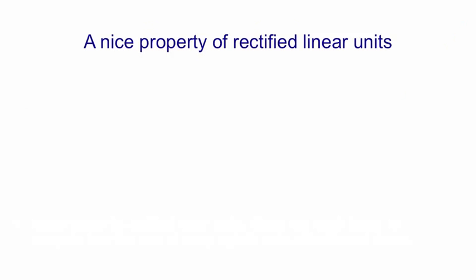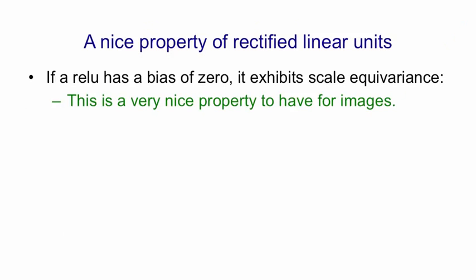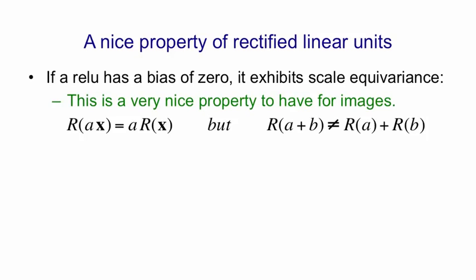One nice property of rectified linear units is that if they have a bias of zero, they exhibit scale equivariance. This is a very nice property to have for images. What scale equivariance means is that if you take an image x and multiply all the pixel intensities by a scalar a, then the representation of ax in the rectified linear units will be just a times the representation of x. In other words, when we scale up all the intensities in the image, we scale up the activities of all the hidden units, but all the ratios stay the same. Rectified linear units aren't fully linear because if you add together two images, the representation you get is not the sum of the representations of each image separately.